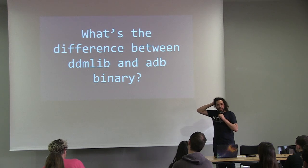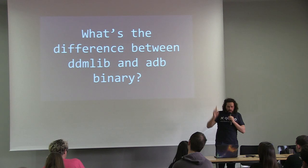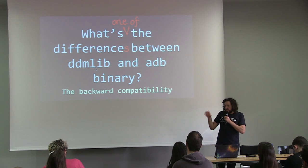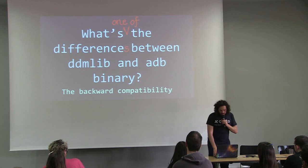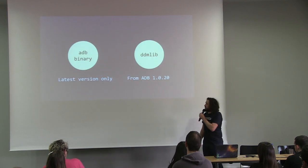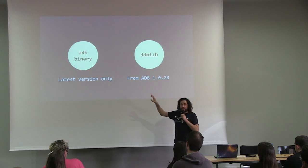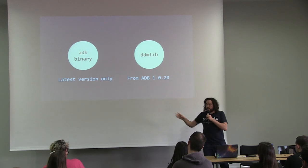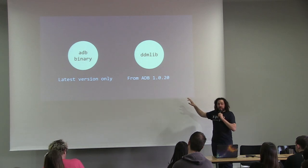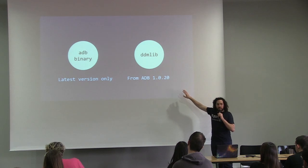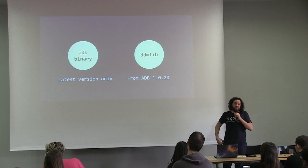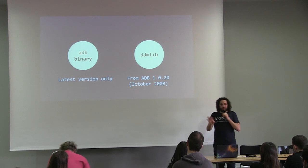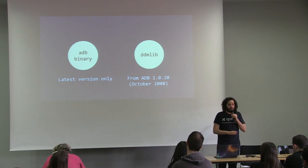What's the difference between DDMLIB and the ADB binary? There are many, but the most important one is backward compatibility. An ADB binary will only be compatible with the very last version of ADB you launched — that's why you have all those errors in your terminal. Actually, DDMLIB is compatible with ADB version 20 and up — and version 20 was released in October 2008. So you're good to go — it will be compatible with any ADB device you ever meet in your life.